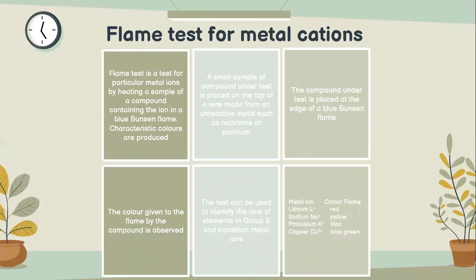Flame test for metal cations. A flame test is a test for particular metal ions by heating a sample of a compound containing the ion in a blue Bunsen flame. Characteristic colors are observed. A small sample of the compound under test is placed on the tip of a wire made from an unreactive metal such as nichrome or platinum. The compound under test is placed at the edge of a blue Bunsen flame and the color given to the flame by the compound is observed.